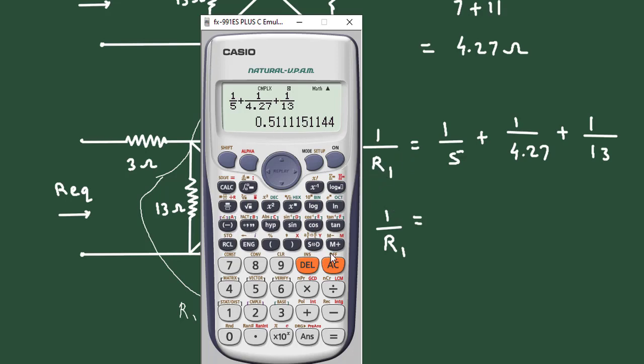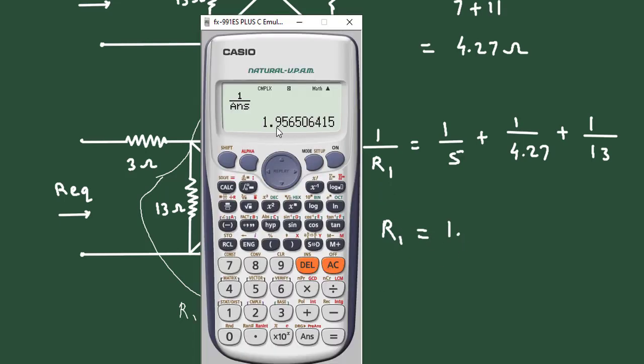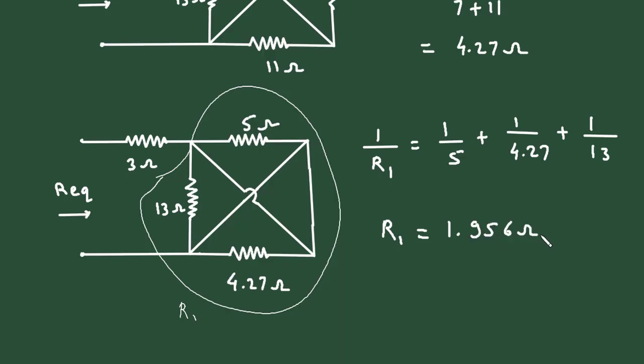This equals 0.51. So, if we divide 1 by this answer, it equals 1.95. Therefore, R1 equals 1.956 ohm.